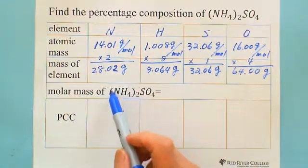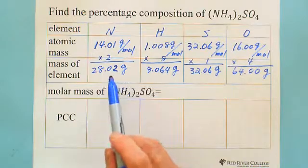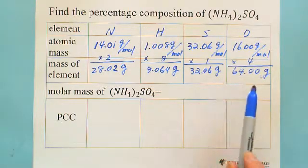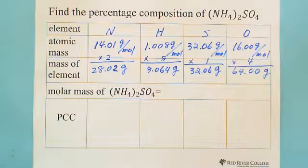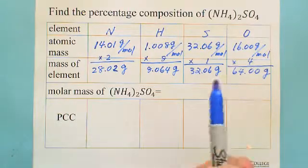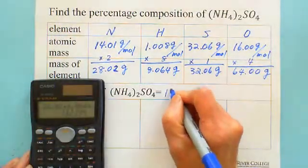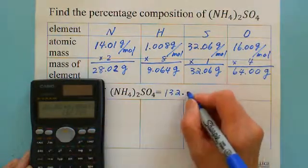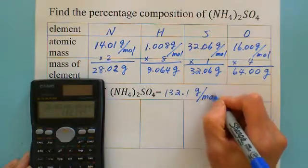The total molar mass for one mole of ammonium sulfate: add all of them — 28.02 plus 8.064 plus 32.06 plus 64.00. Using a calculator, you get 132.1. Because we keep 4 significant figures, we round to 132.1 grams per mole for this compound.